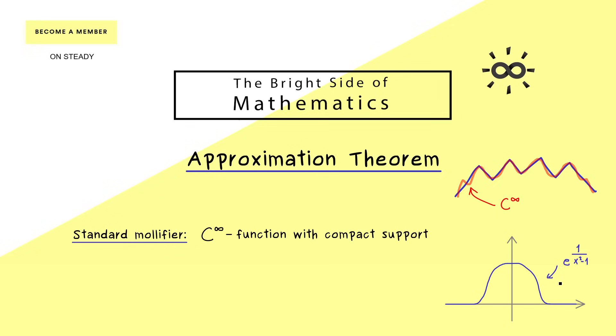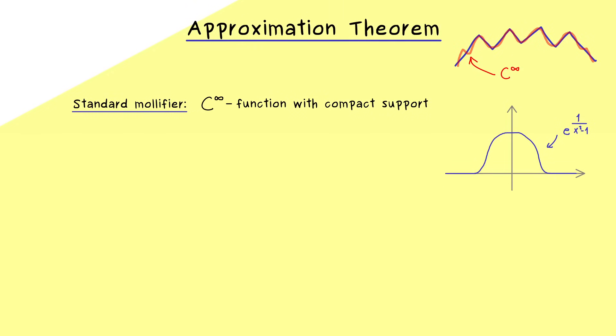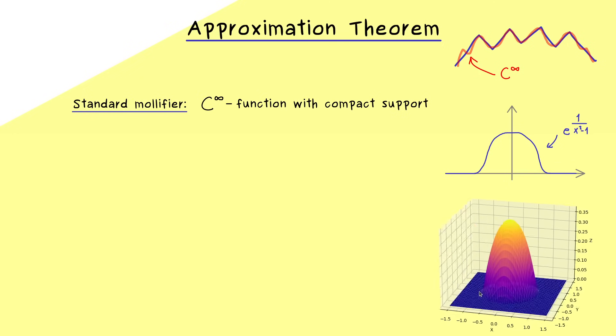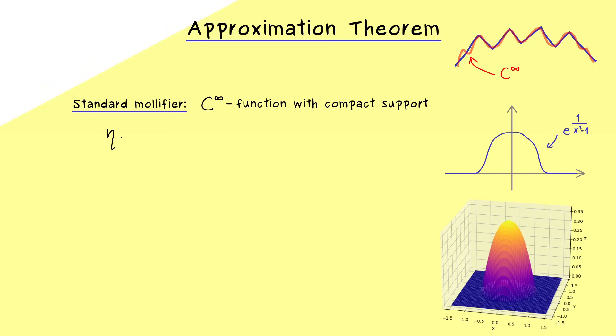And now the good thing is that this definition also works if our domain is of higher dimension. So for example, in two dimensions it would look like this. So we also have a graph of a function that goes smoothly into the zero function. Therefore, we can immediately define such a nice function η on R^n, and the output of η is just a real number. And now we know that we just have to distinguish two different cases here. The first value, as we have discussed, is given by the exponential function, and the second value is given by zero.